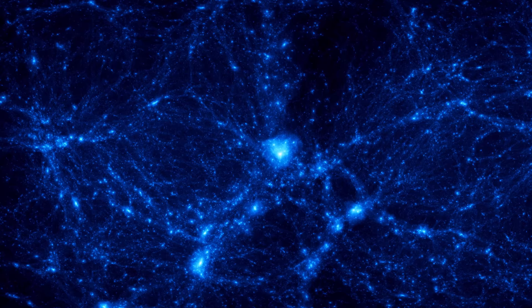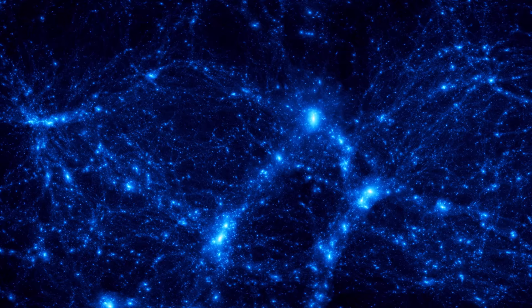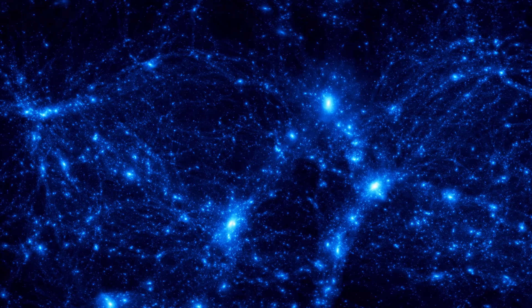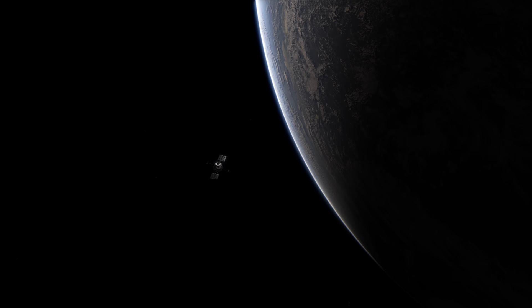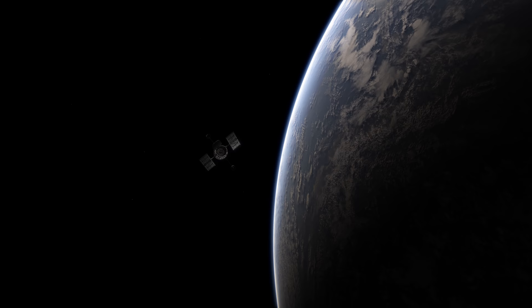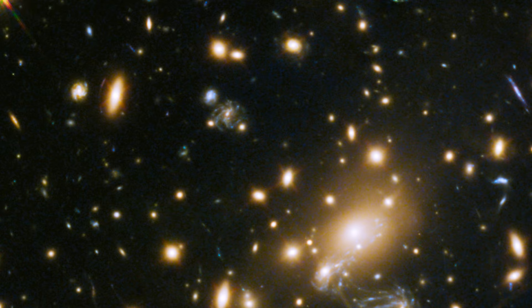Even as astronomers struggled to define what dark matter is, they discovered another mysterious and powerful influence on cosmic evolution. In the late 1990s, two groups of astronomers asked whether there's enough dark matter out there to one day slow or even halt the expansion of the universe. Using the Hubble Space Telescope, along with ground-based telescopes, the team set out to track the rate of cosmic expansion through the entire history of the universe.